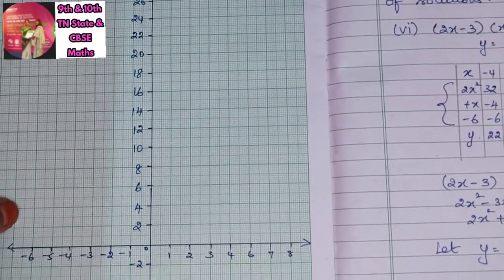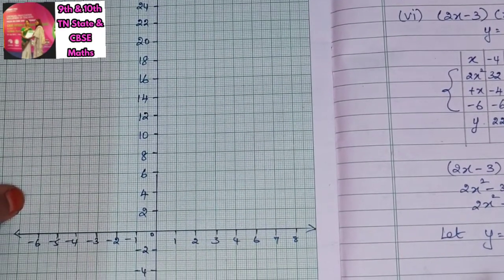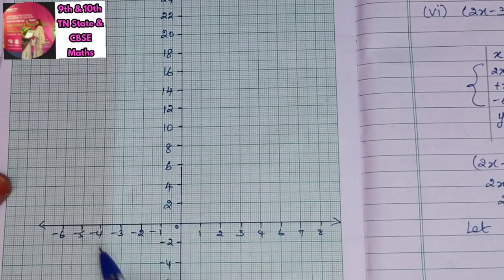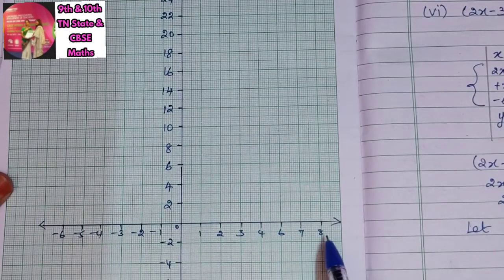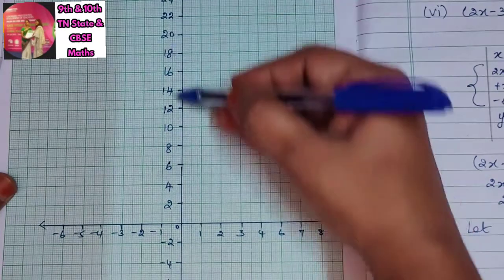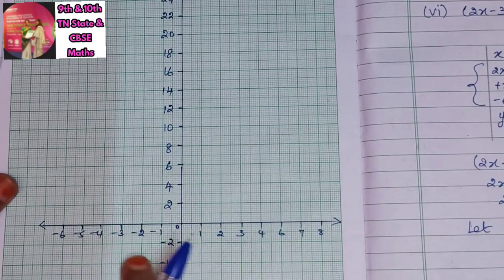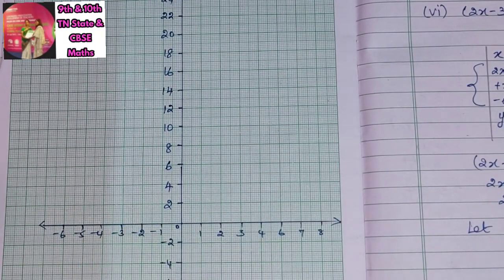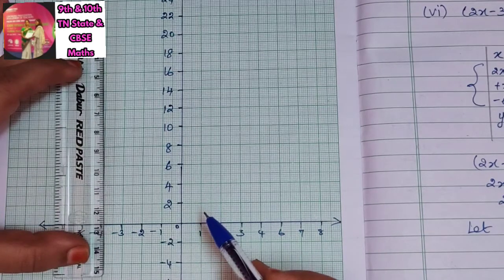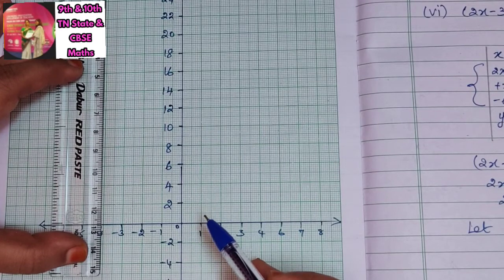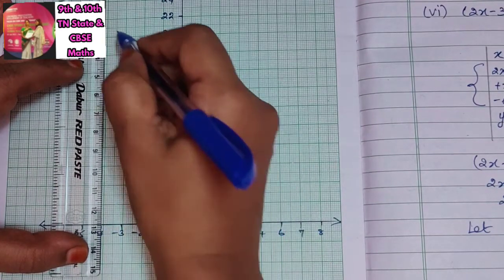We now have the x and y coordinates. The coordinate points to plot are: (-4, 22), (-3, 9), (-2, 0), (-1, -5), (0, -6), (1, -3), (2, 4), (3, 15), and (4, 30).